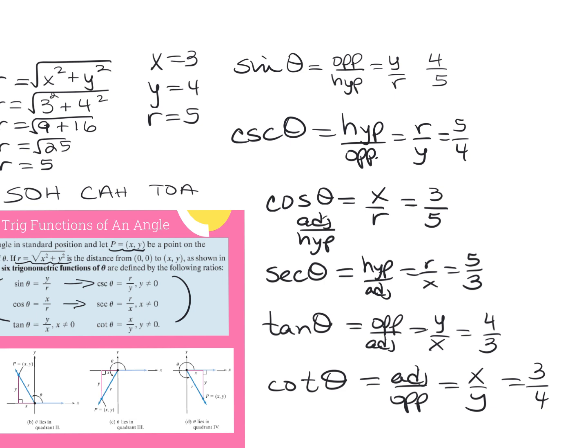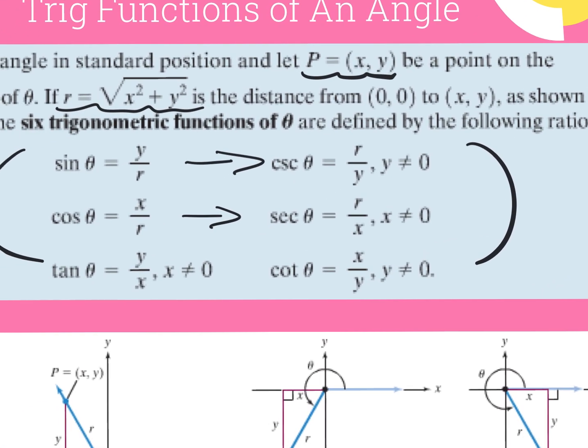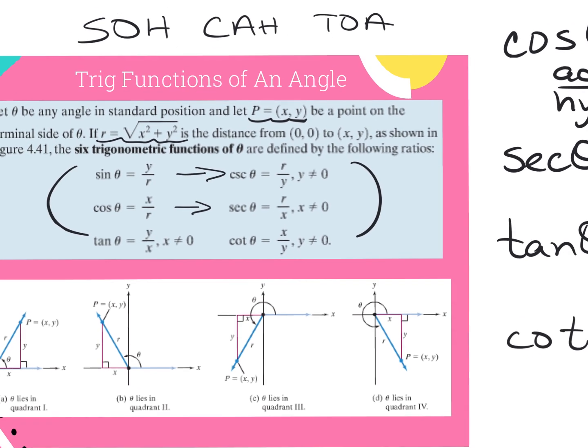When given a coordinate, pull out x and y from the ordered pair, find r by doing the square root of x squared plus y squared, and plug it in. If r is not a perfect square, leave it in simplest radical form, and if the radical ends up in the denominator you'll need to rationalize. Also note that if the denominator of any fraction is zero, that function is undefined.